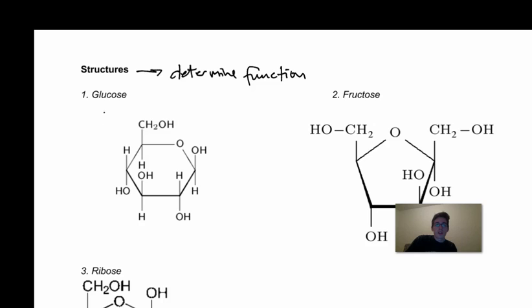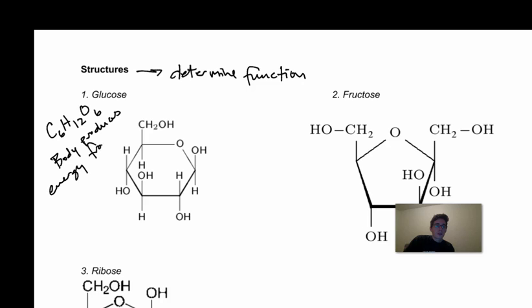The first and most important sugar is glucose. This is a sugar that has the formula C6H12O6. We're not a hydrocarbon anymore because we have oxygen involved. This is the sugar that our bodies produce energy from. When your body metabolizes or breaks down a sugar, we break it into glucose, and that's how we use it to make energy.